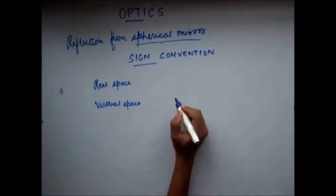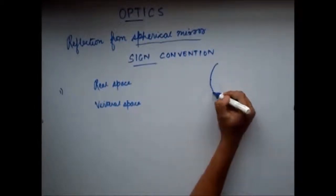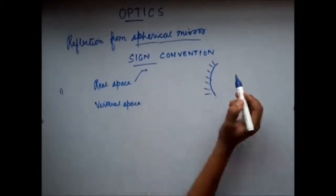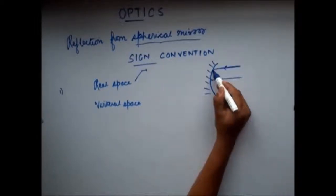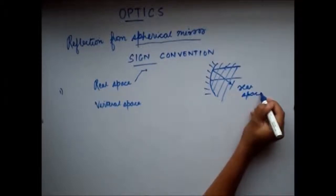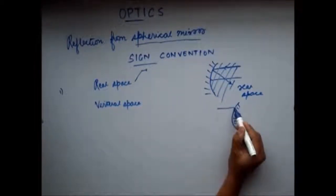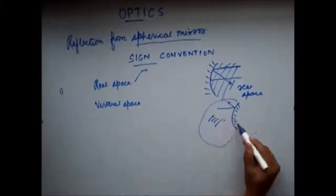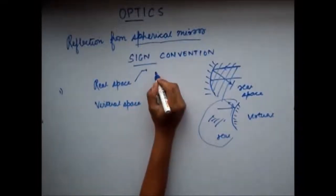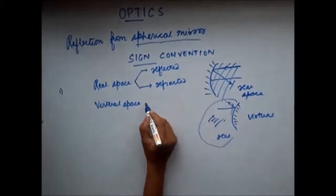What is real space and what is virtual space? Real space is the space in which the reflected ray lies. For example, if I have a concave mirror, then if a ray strikes here it gets reflected in this direction — so this space is my real space. Similarly, if I have a convex mirror, ray strikes here and goes like this, so this whole part is my real space and this side is my virtual space. So, the real space is the space in which the reflected or the refracted ray lies; the other part is the virtual space.